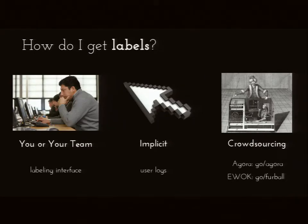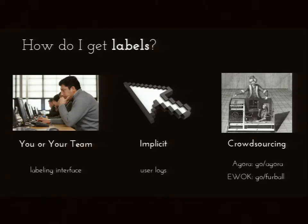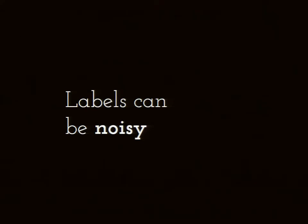Getting a label for all your input set is very costly. You can go and sit and start labeling manually — since we're humans we can know what the exact label is for a particular input. Or labels can be implicit — like on YouTube, you can get a label of whether it's a good video depending upon the user viewing time. Or you could crowdsource labels. An important factor is that because these are labeled by humans or inferred automatically, they can be noisy.